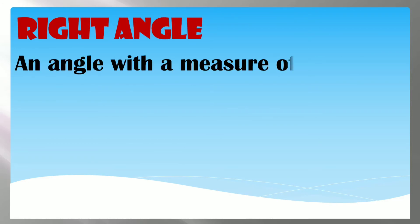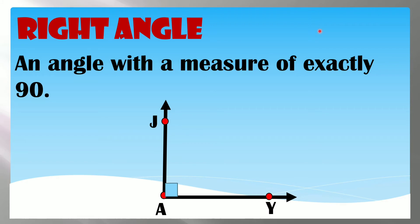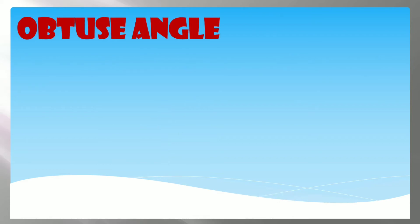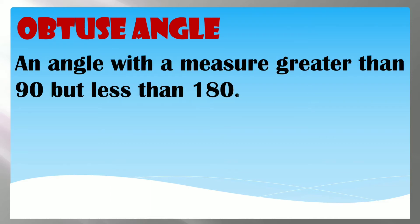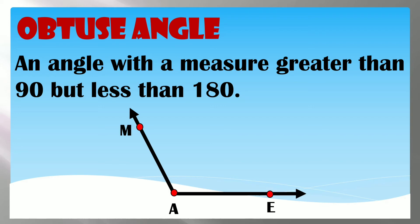A Right Angle is an angle with a measure of exactly 90. When you see a right angle, it looks like the letter L and has a small box indicating it is a right angle. An Obtuse Angle is an angle with a measure greater than 90 but less than 180. When the opening is large, it is an obtuse angle. Angle MAY is an example of an obtuse angle.